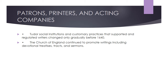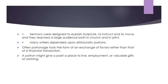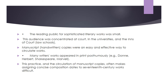Tudor social institutions and customary practices that supported and regulated writers changed only gradually before 1640. The Church of England continued to promote writings including devotional treatises, tracts, and sermons. Sermons were designed to explain scripture, to instruct, and to move, and they reached a large audience both in church and in print. Many writers depended upon aristocratic patronage. Often patronage took the form of an exchange of favors rather than a financial transaction — a patron might give a poet a place to live, employment, or valuable gifts of clothing. The reading public for sophisticated literary works was small, concentrated at court, the universities, and the Inns of Court.